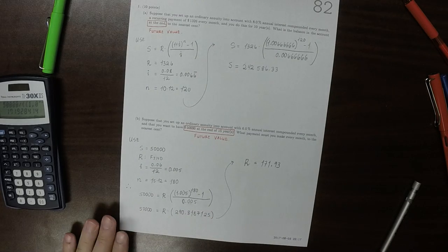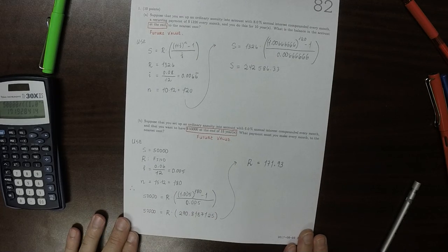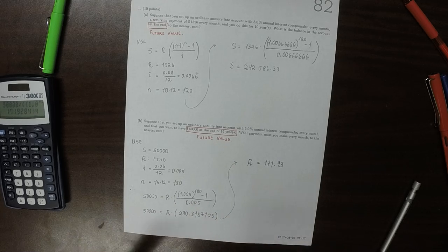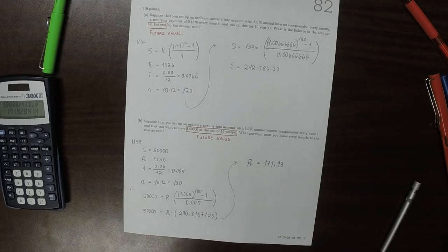So in order to have that much money, we need to deposit $171.93 every month.